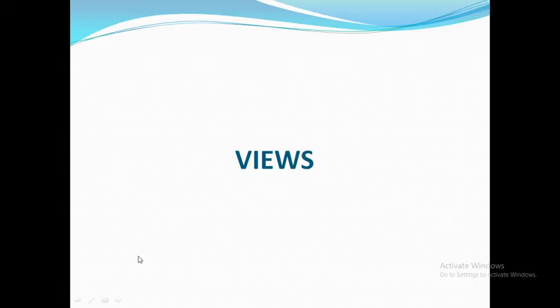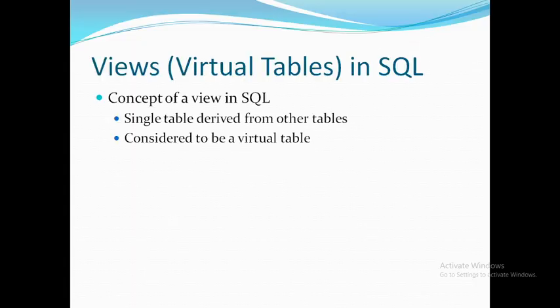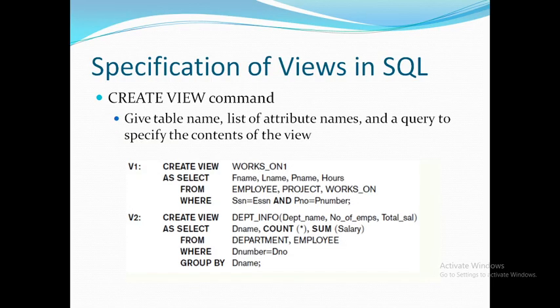Next is Views. A view is like a single table derived from other tables, also known as a virtual table. Only the definition of the view is stored in the database, and it depends on other physical tables called base tables. We create a view using the CREATE VIEW command, provide the view name, optionally list attribute names, and write the query to specify the contents of the view.